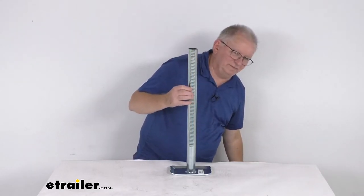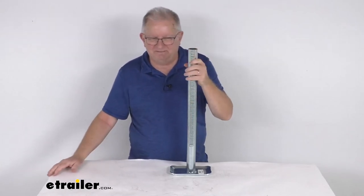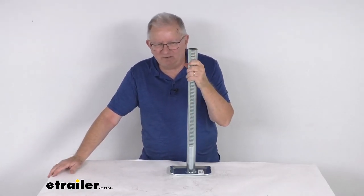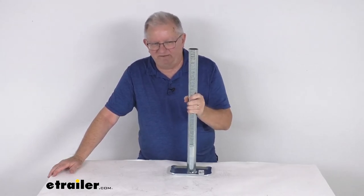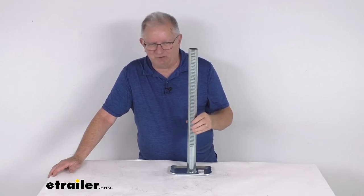We also sell just the gearbox and handle that fits this assembly. The weld-on model is BD018161 and the A-frame is BD018155. Both are listed on this product page as related products.